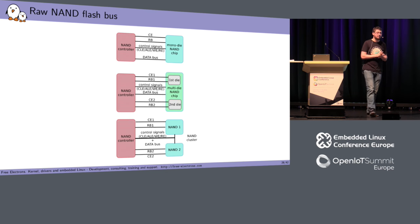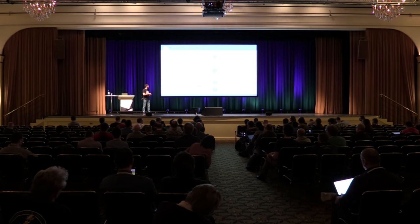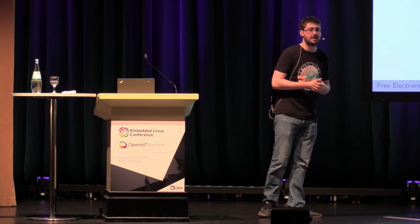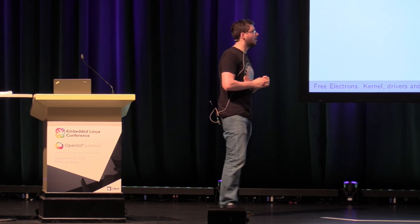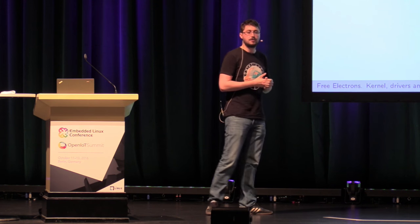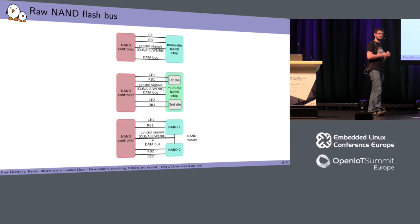Q: What if the NAND cluster is made of multi-die NAND chips? A: It could work. You would just have more chip select lines and more dies. You would have two nodes and each of those nodes would be assigned to different chip selects, for example.